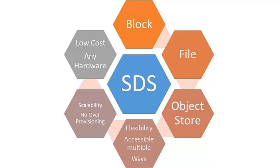Virtualized data path provides block, file, and object interfaces that support applications written to these interfaces. Scalability provides seamless ability to scale the storage infrastructure without disruption to the specified availability or performance. Transparency facilitates the storage consumers to monitor and manage their own storage consumption.